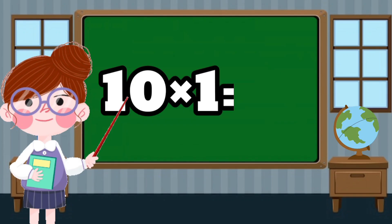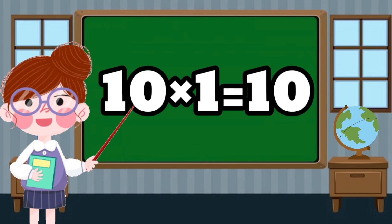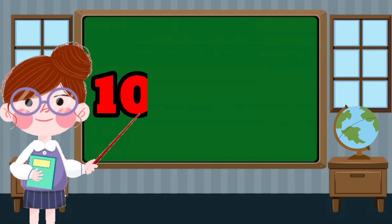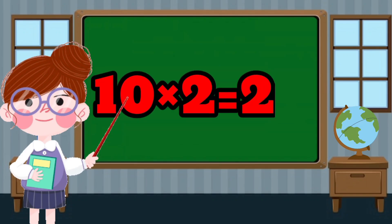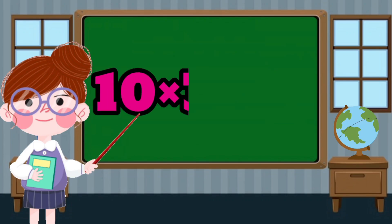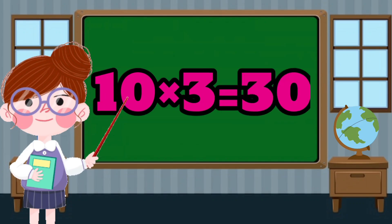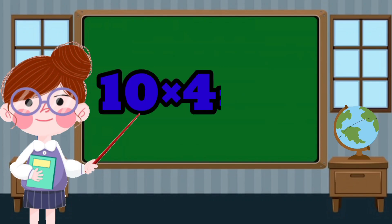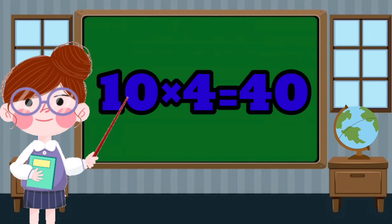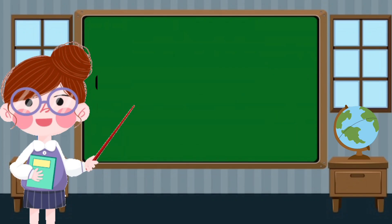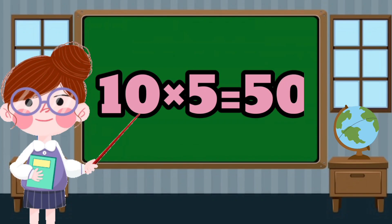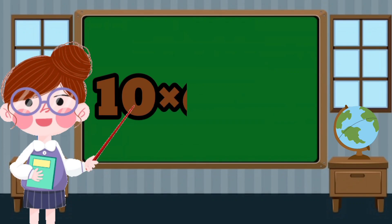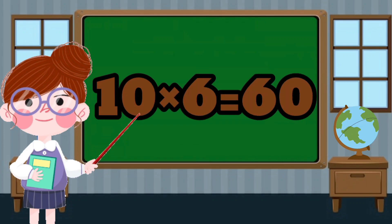10 x 1 equals 10. 10 x 2 equals 20. 10 x 3 equals 30. 10 x 4 equals 40. 10 x 5 equals 50. 10 x 6 equals 60.